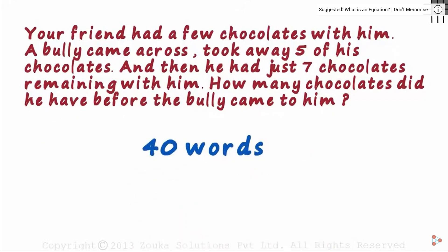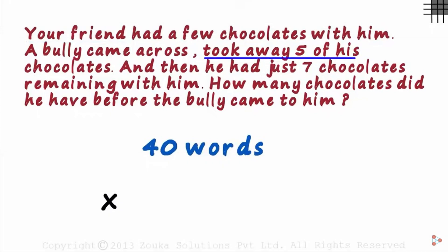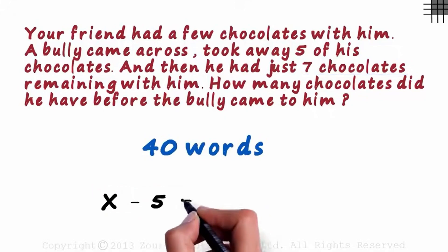Let's see if we can shorten the question a bit. Assume your friend had x chocolates with him. The bully took away 5 of his chocolates, so we subtract 5 from x. And after all this, your friend was left with 7 chocolates. This entire thing will then equal 7.